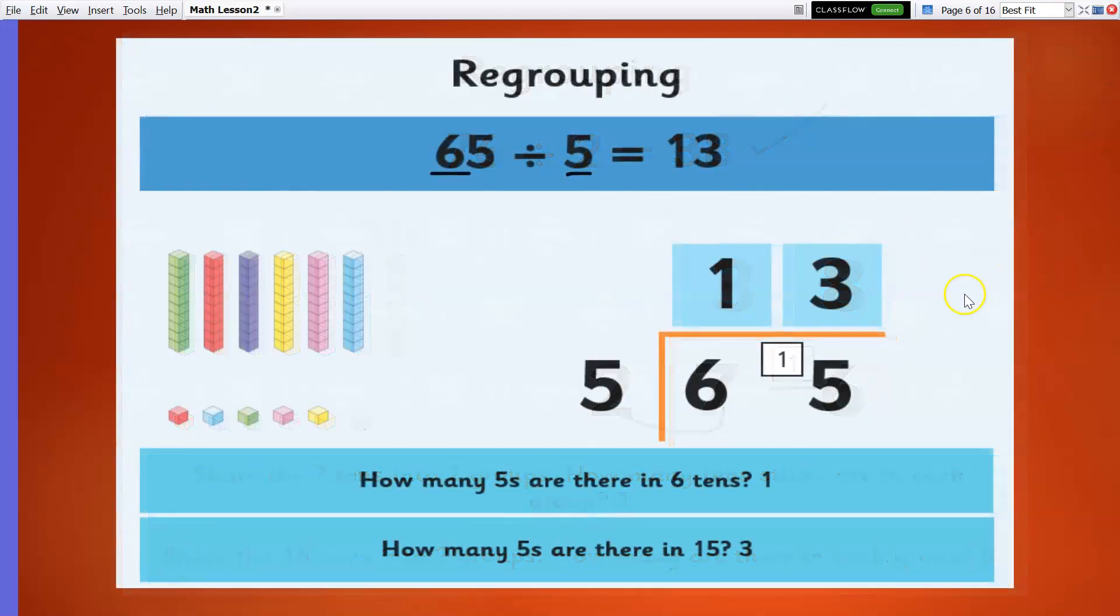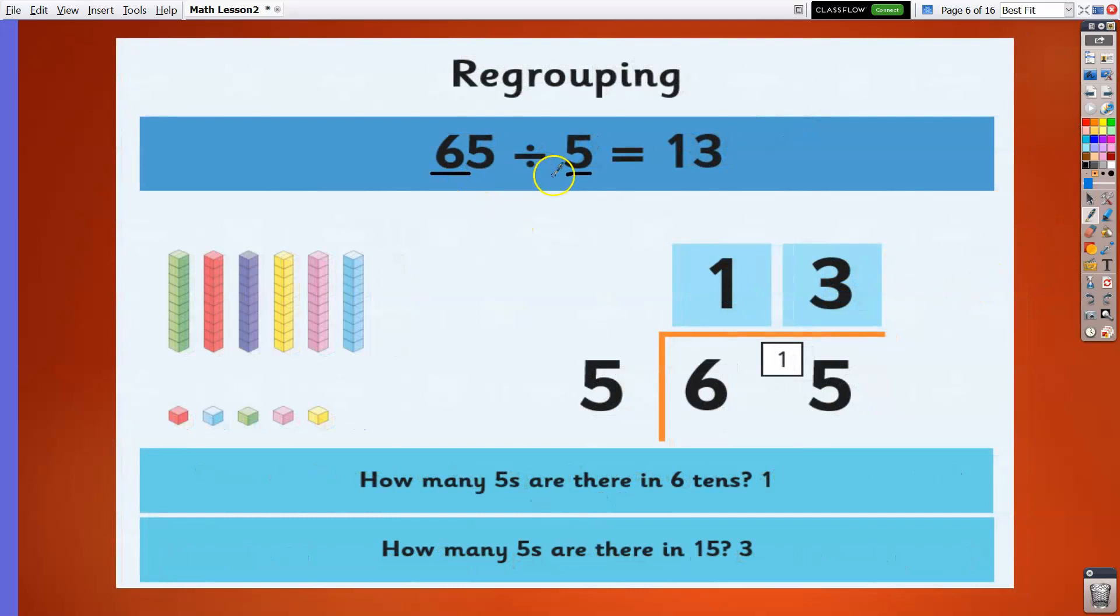Another example: 65 divided by 5 equals 13. Again, 6 divided by 5 is 1, remainder 1. We put the remainder here, it becomes 15. 15 divided by 5 is 3.